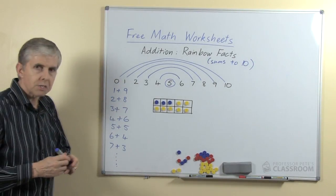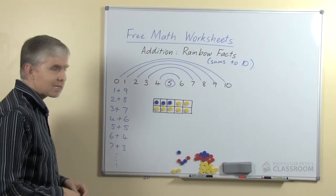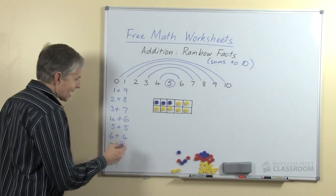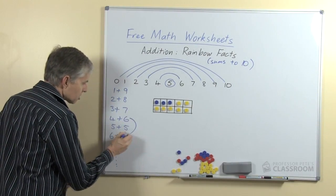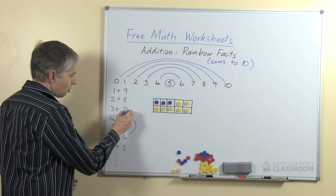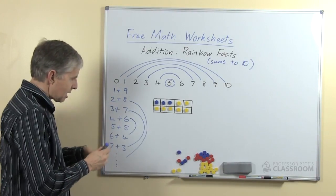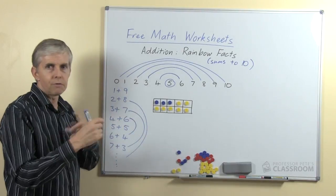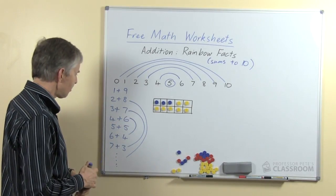Another thing the students may notice, and I'll probably ask them what else can you see, is that the pairs are repeated in reverse order. So we have four and six and six and four, we have three and seven and seven and three, and of course that's the general principle of reversing addition number facts.